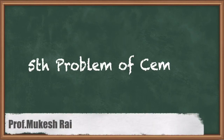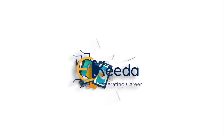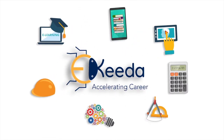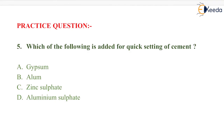Hello students, today we are going to solve the fifth problem on cement. The question is: which of the following is added for quick setting of cement? The options are gypsum, alum, zinc sulphate, and aluminium sulphate.